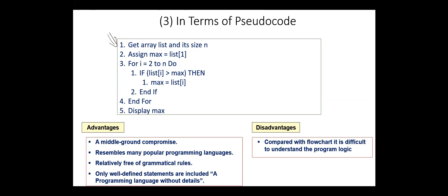Pseudocode has the following advantages: It's an immediate ground compromise between the natural language form and the programming language form. It resembles many popular programming languages. Pseudocode is relatively free from grammatical rules. Only well-defined statements are included. We can consider it as a programming language without details. However, compared to the flowchart, it's difficult to understand the program logic.